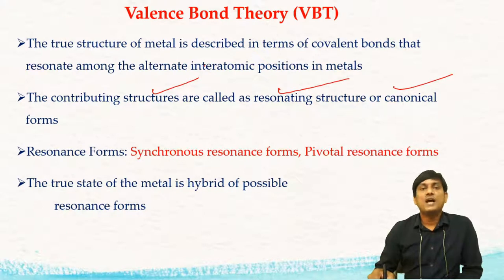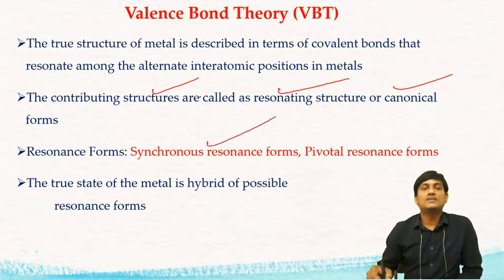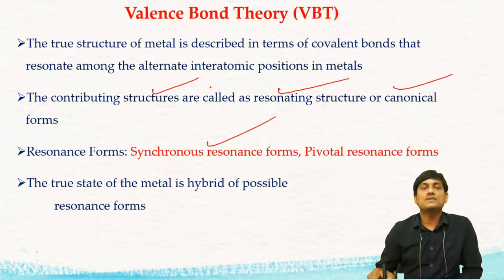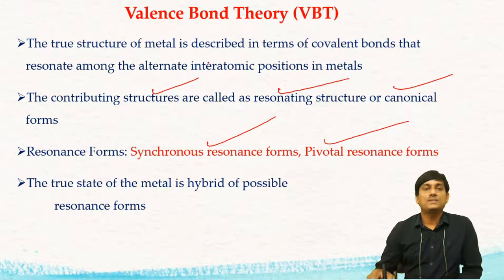These contributing structures are called resonating structures or canonical forms. In metals, we have two different types of resonance forms: one is a synchronous resonance form, and the second one is an unsynchronous resonance form, also called pivotal resonance forms.